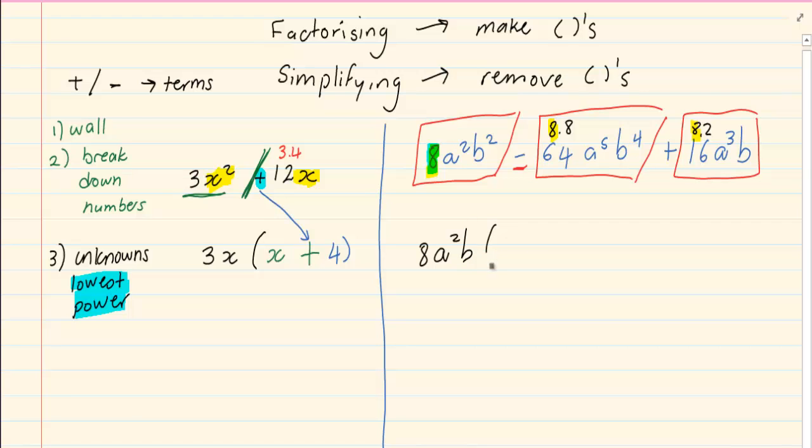Now what is left? If you find it difficult to decide what is left, take a pencil and remove from each little block what you took out. So I took out an 8 here. I took out an a squared, but I only took out one b.